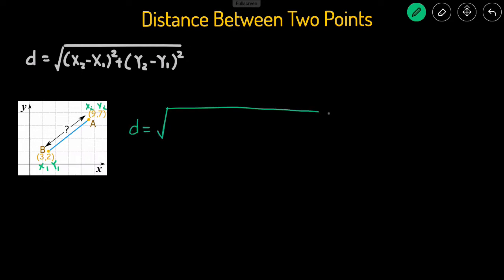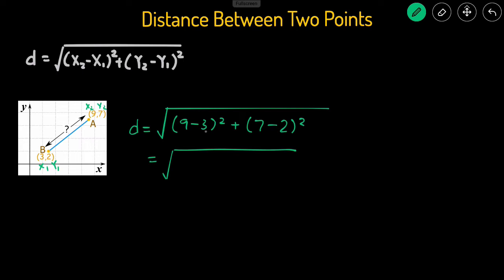Distance is equal to the square root of x2, which is 9, minus x1, which is 3, squared, plus y2, which is 7, minus y1, which is 2, squared. And then now we just simplify this. 9 minus 3, that's 6. So that'll be 6 squared plus 7 minus 2 is 5, and that'll be 5 squared. Then that just becomes 36 plus 25, and that's going to equal the square root of 61.